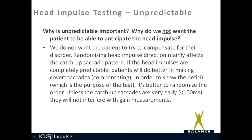Why is unpredictable important? Why do we not want the patient to be able to anticipate the head impulse? Well, we don't want the patient to try to compensate for their disorder. Randomizing head impulse direction mainly affects the catch-up saccade pattern. If the head impulses are completely predictable, patients will do better in making covert saccades, or compensating for their disorder. In order to show the deficit — which is the purpose of the test — it's better to randomize the order.